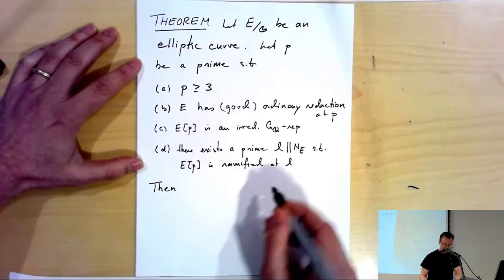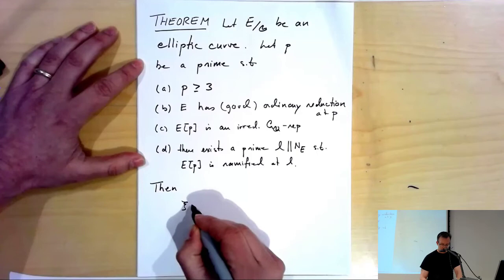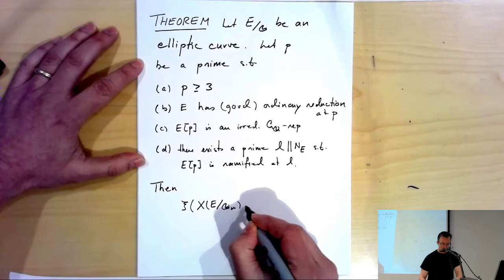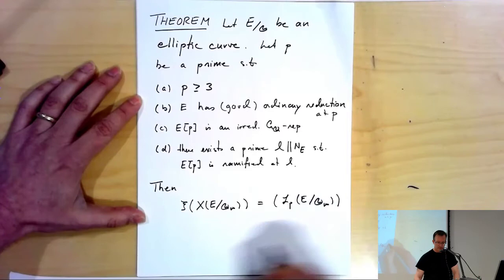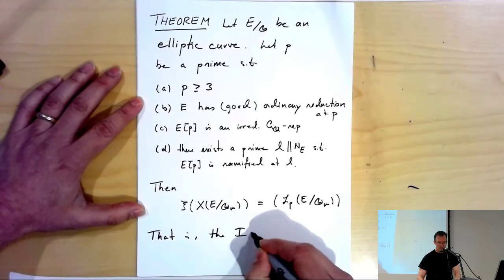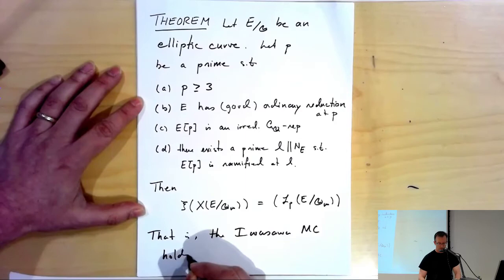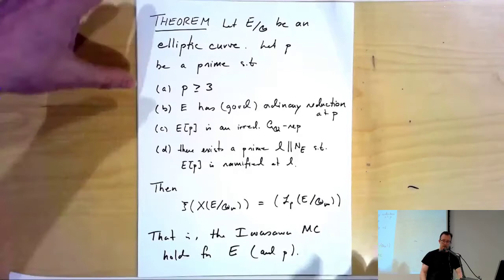Then the characteristic ideal of the dual of the Iwasawa-Selmer group is generated by the p-adic L-function of the elliptic curve — that is, the main conjecture is true. The Iwasawa main conjecture holds for E and p. And I managed to get that all on one slide.